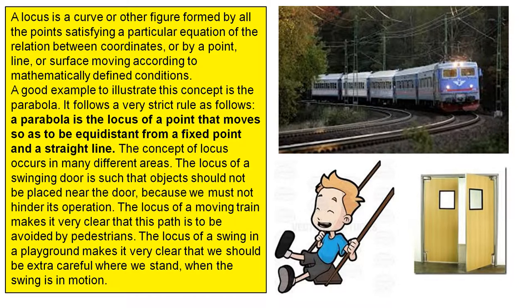A good example to illustrate this concept is the parabola. It follows a very strict rule as follows: a parabola is the locus of a point that moves so as to be equidistant from a fixed point and a straight line.